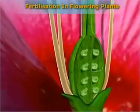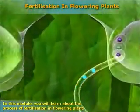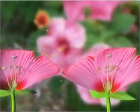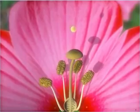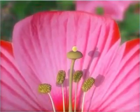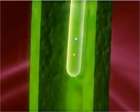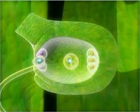Fertilization in flowering plants. In this module, you will learn about the process of fertilization in flowering plants. Fertilization in flowering plants is defined as the fusion of a male gamete carried by pollen with a female gamete present in the ovule to form a diploid zygote, which later develops into an embryo. Fertilization in plants is known as double fertilization, as two fusions occur in the embryo sac instead of one.